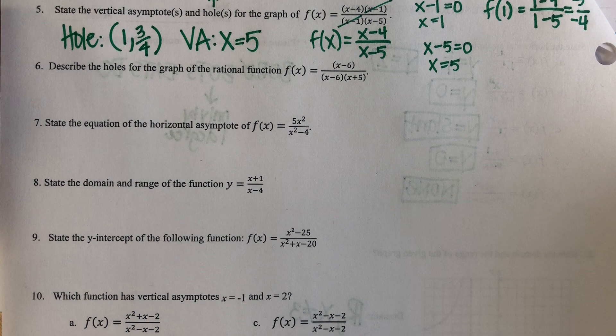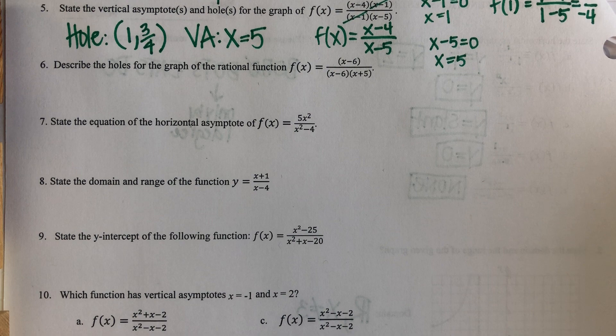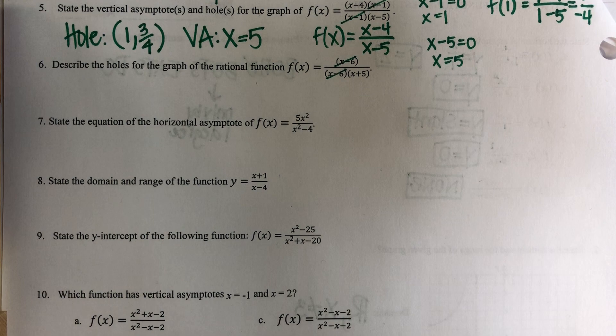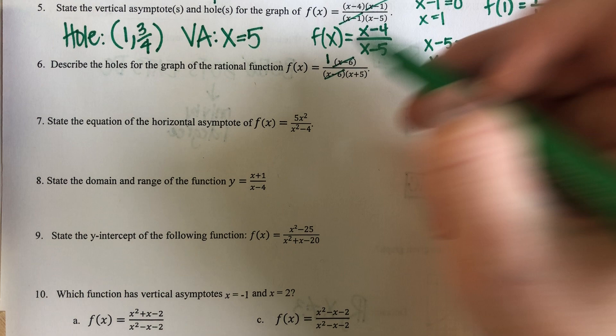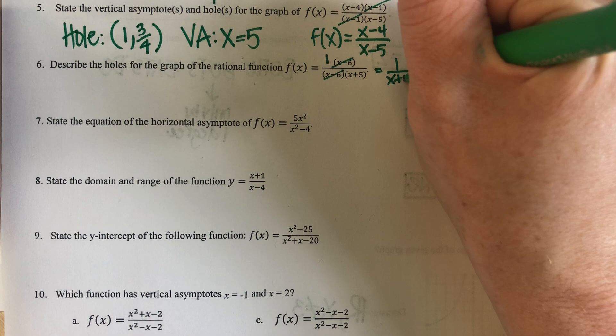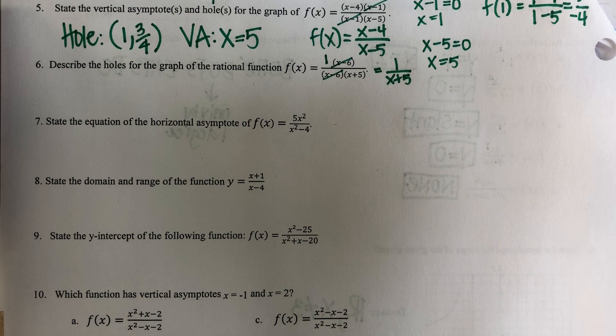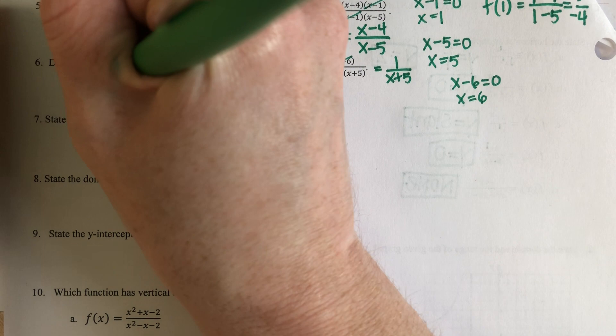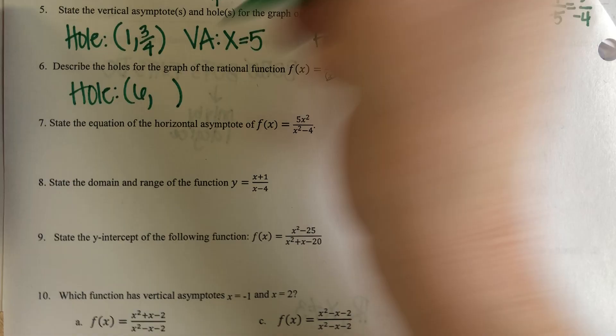Number six: describe the holes for the graph of the rational function F of X. I'm looking for where things cancel out, and I had an X minus six on the top and the bottom. If I cross everything out up top, I have to remember that there's a one left up there. So that's one over X plus five — that is my leftover function. I'm going to take X minus six, set it equal to zero, and solve for X. That gives me a hole where the X value is positive six.